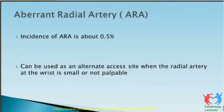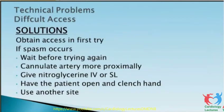Aberrant radial arteries, again a difficult situation — incidence is 0.5 percent and can be used as an alternative access site when the radial artery at the wrist is small or not palpable. Solutions for difficult access: obtain access on the first try as repeated punctures decrease success. If spasm occurs, wait before trying again. You can access the artery more proximally, give nitroglycerin IV or sublingual, and have the patient open and close the hand. Use another site if spasm is very severe.